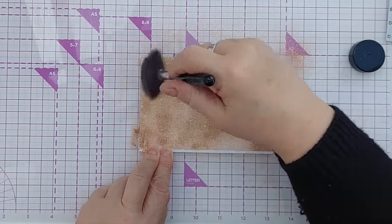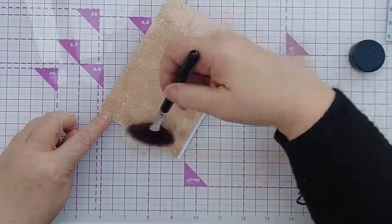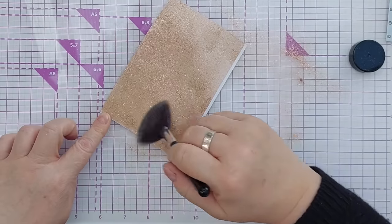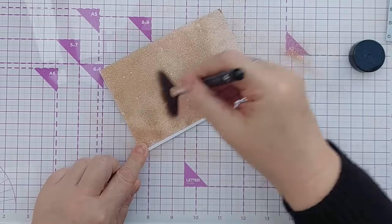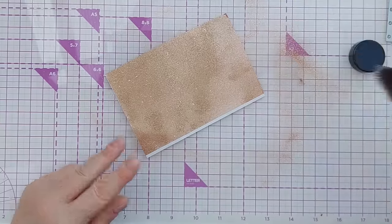There are lots of ways you could add gold onto the back of your cardstock, you could stick it to a piece of gold cardstock, you could paint it on, this is just the way I'm choosing to do it today.